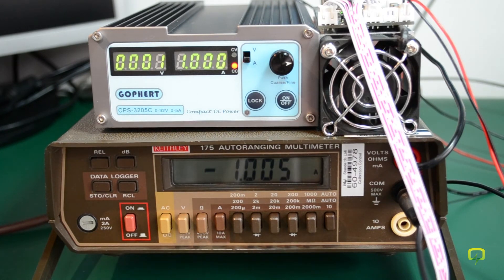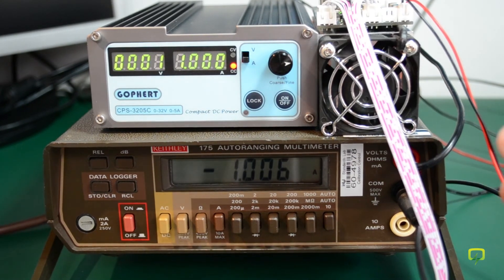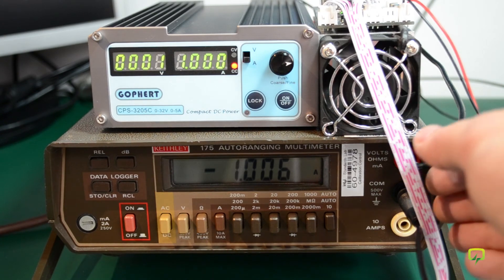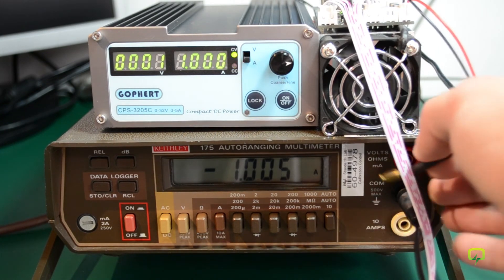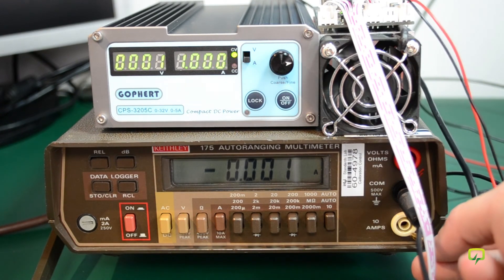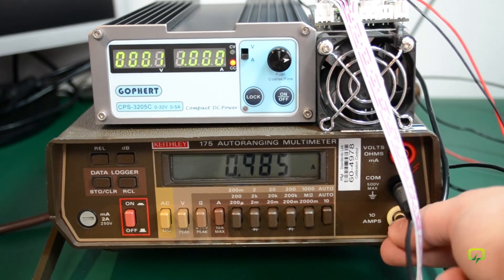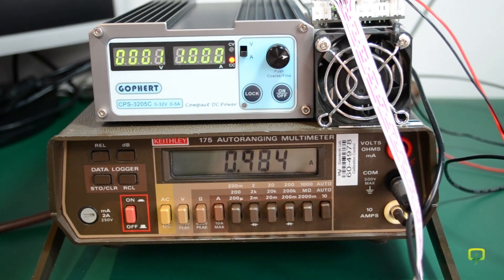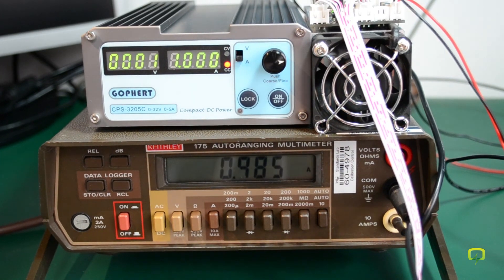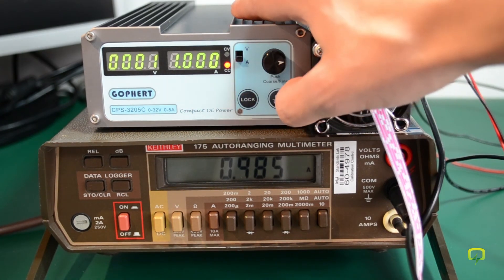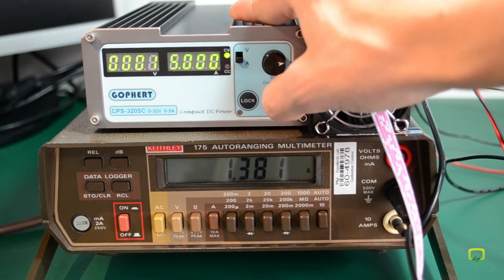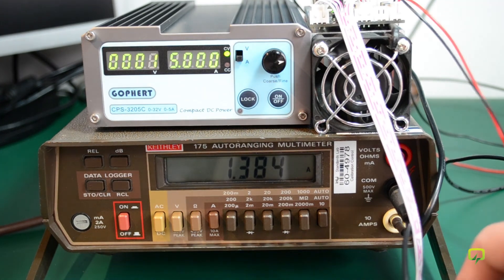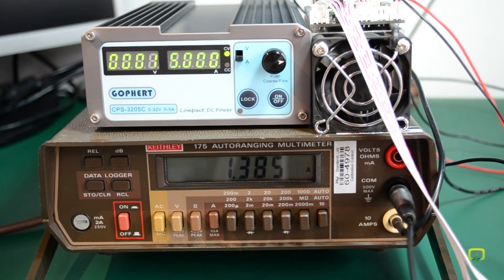Next, I'm going to move the multimeter on the 10 amp range because the next calibration mark is at 5 amps. Alright. And now if I press the on/off button, the power supply should jump to the 5 amp calibration. I need to adjust my dummy load.